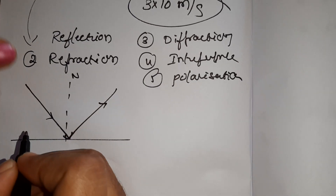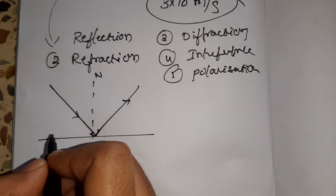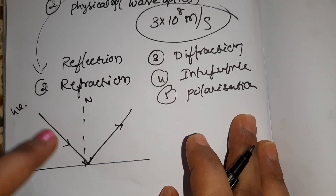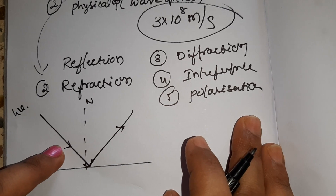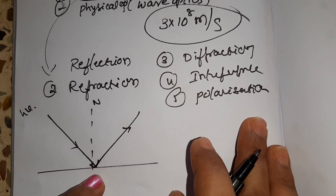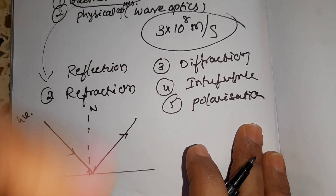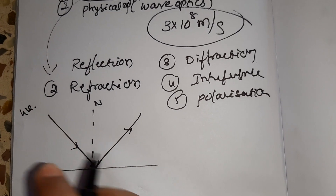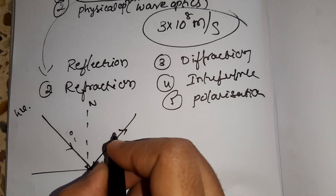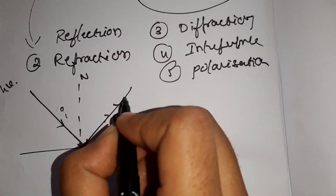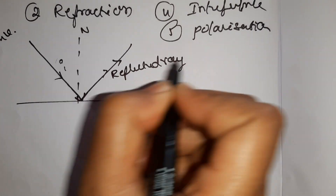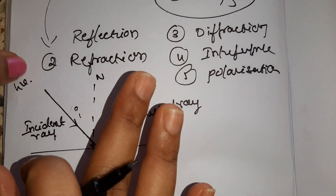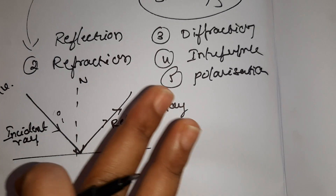Light is nothing but photons. When light hits a surface, the atoms on the surface cause the light to bounce back. This bouncing back is nothing but reflection. The incoming ray is the incident ray, and the bounced-back ray is the reflected ray.